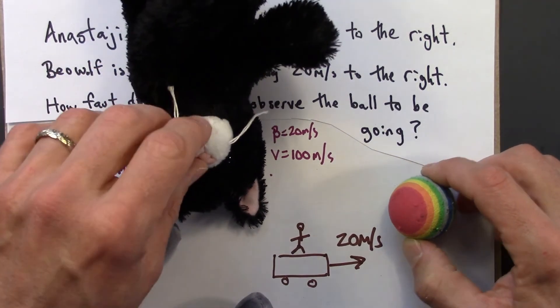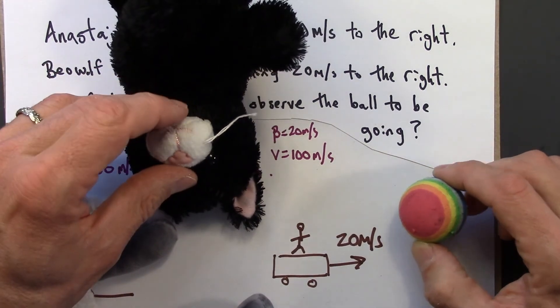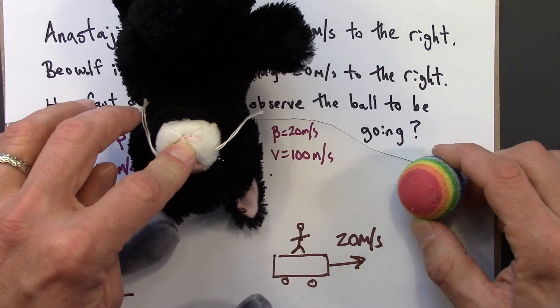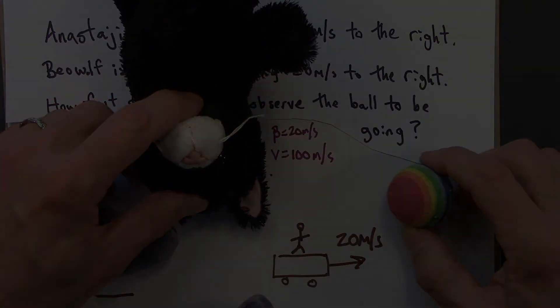So Beowulf says, aha, the ball traveled 80 meters in one second, so I think that it goes at 80 meters per second. And indeed, that's what this formula tells us. Okay. Thank you.